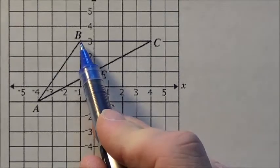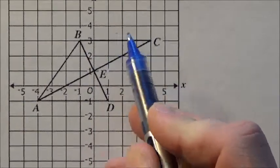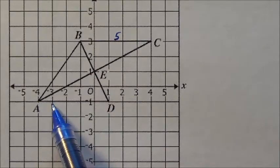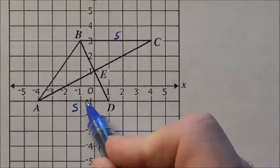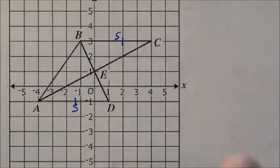The first thing I notice is from here over to C, that goes 1, 2, 3, 4, 5. I know that length right there is 5. If I look down here, this length is 1, 2, 3, 4, 5. I know this length down here is 5 too. So I know that this side right here matches the side right up there.